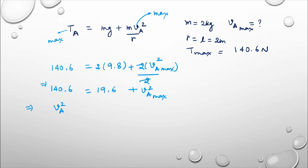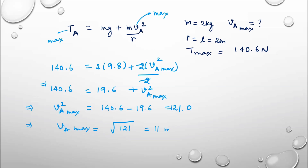So v_A_max² equals 140.6 minus 19.6, which equals 121. Therefore, v_A_max equals the square root of 121, which equals 11 meters per second.